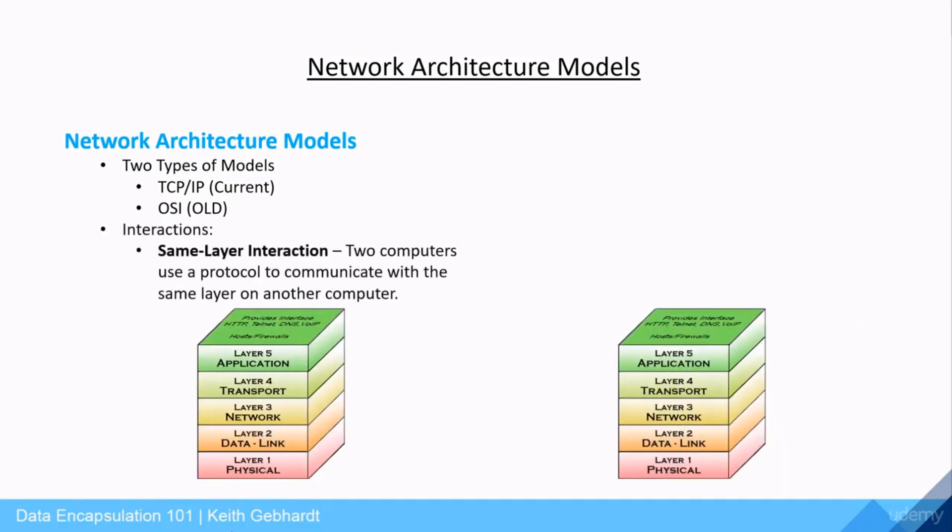When we discuss our architecture models and data encapsulation, we typically talk about them from the top layer moving down, because each layer on the model requires a service from another layer above it. For these layers to interact together to perform their job, they use two different methods.